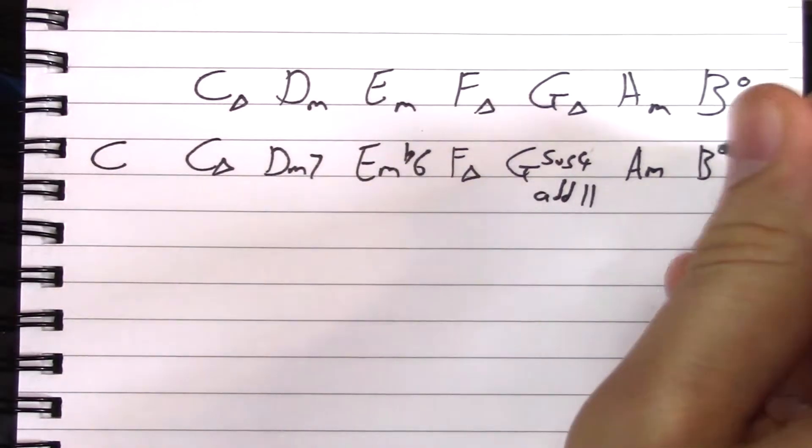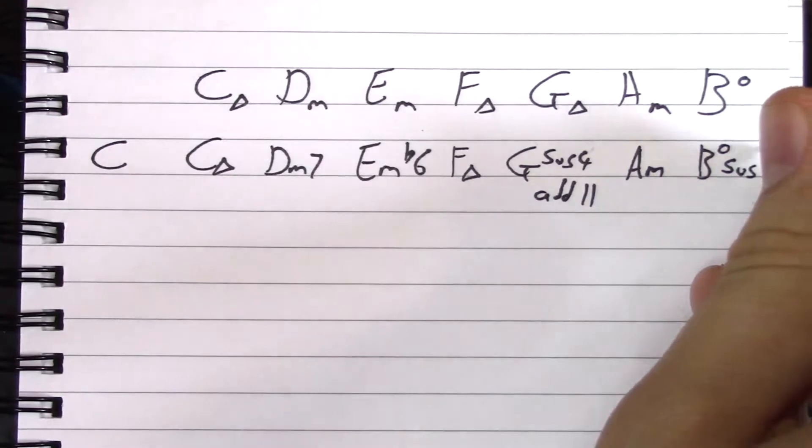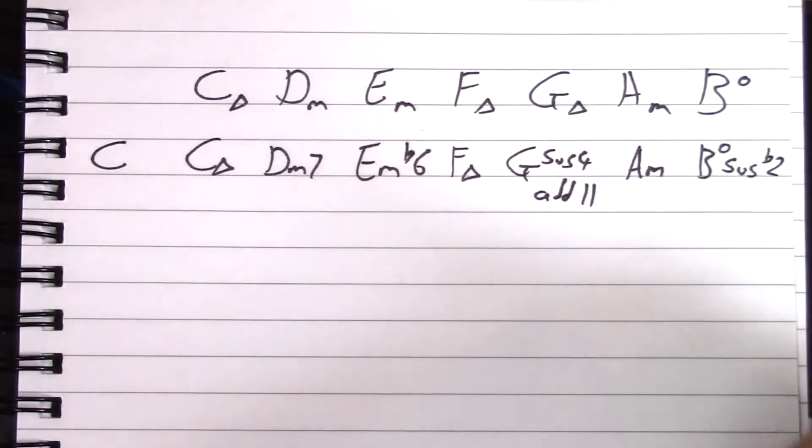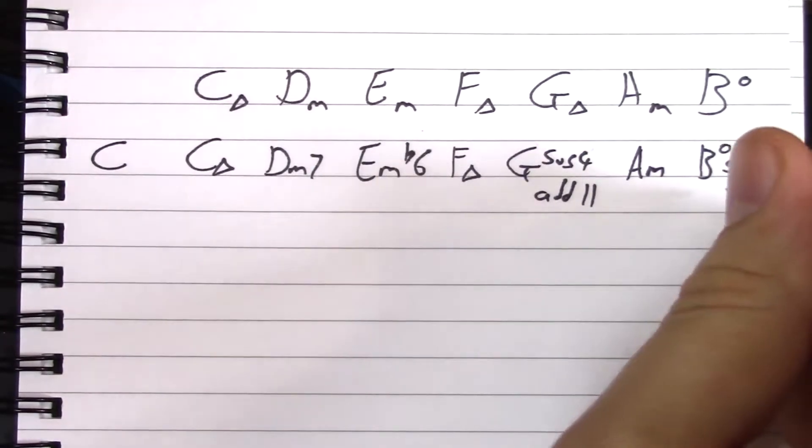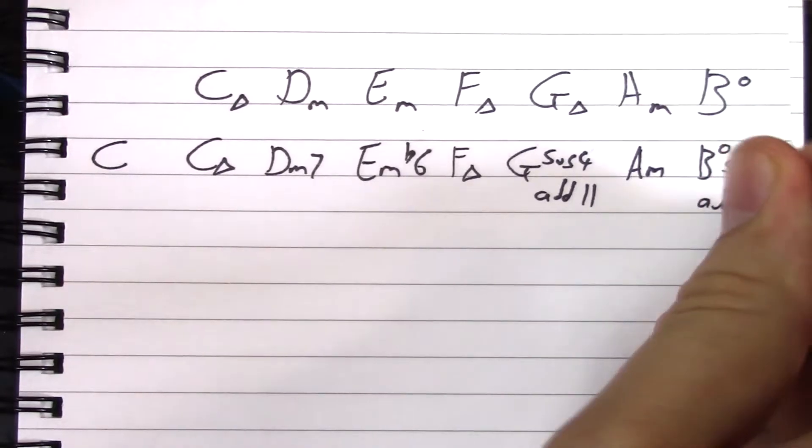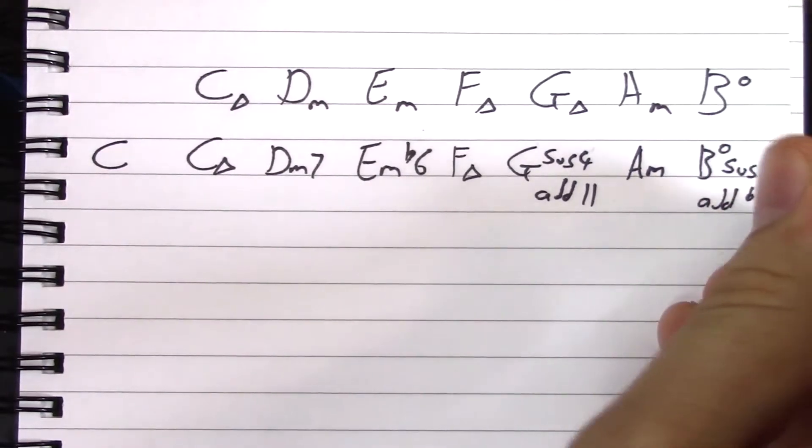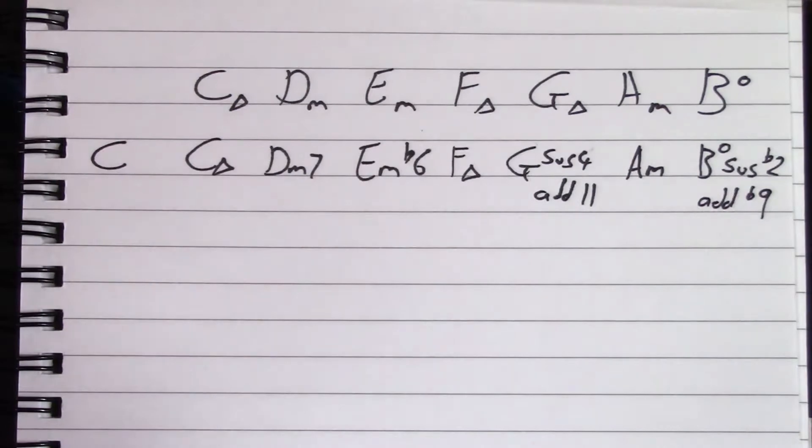That's actually going to be a flat two, so we could have a B diminished sus flat two, or it could be a diminished add flat nine. Again, down to personal taste. I can't promise that will sound any good. Now the eagle-eyed amongst you may have noticed a descending pattern.